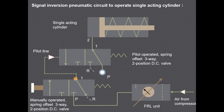This is the pilot line. The pilot line means this particular valve is used to operate another direction control valve, which in turn operates the single acting cylinder. The meaning of signal inversion pneumatic circuit is that when one valve is in the on position, the other valve will be in the off position, and vice versa.